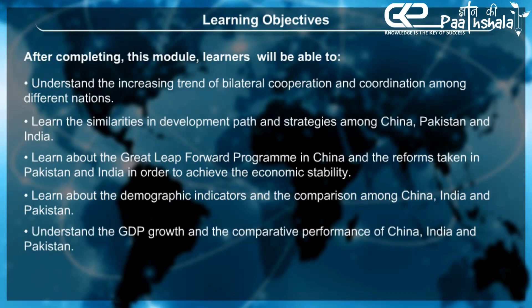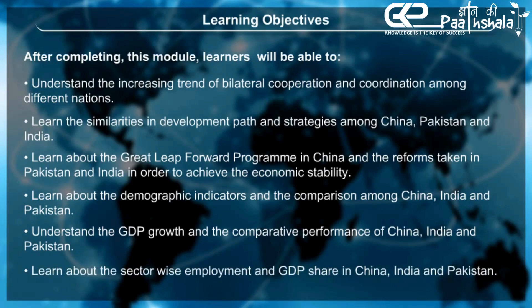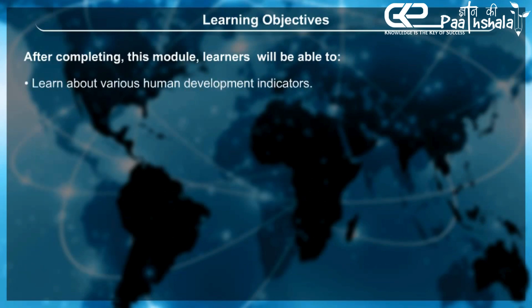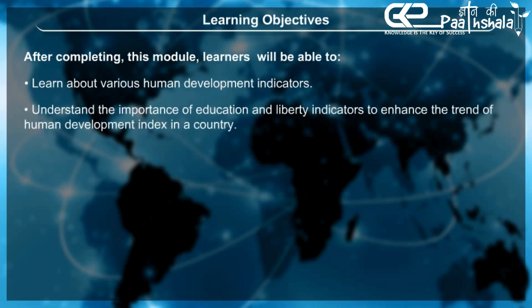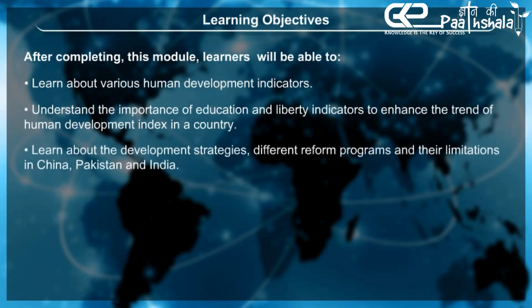Understand the GDP growth and the comparative performance of China, India, and Pakistan. Learn about sector-wise employment and GDP share in China, India, and Pakistan. Learn about various human development indicators and understand the importance of education and liberty indicators to enhance the trend of the Human Development Index in a country. Learn about development strategies, different reform programs, and their limitations in China, Pakistan, and India.